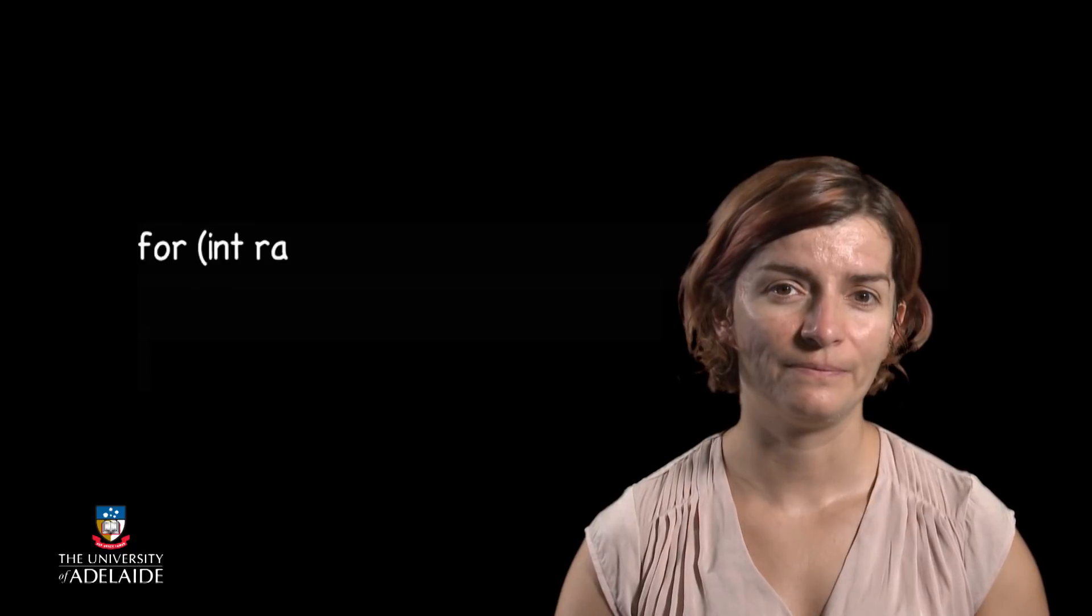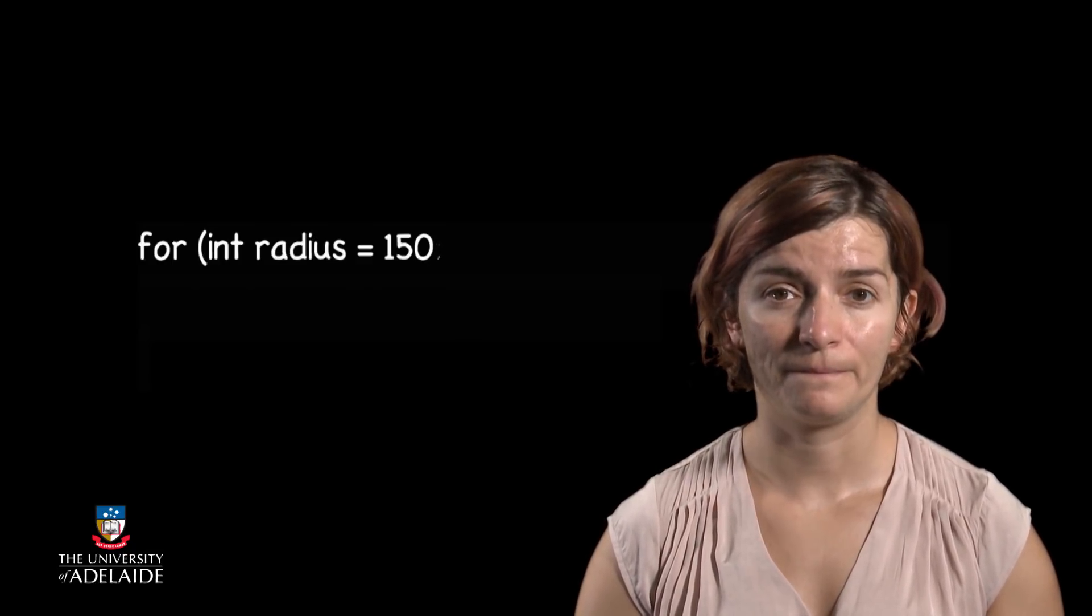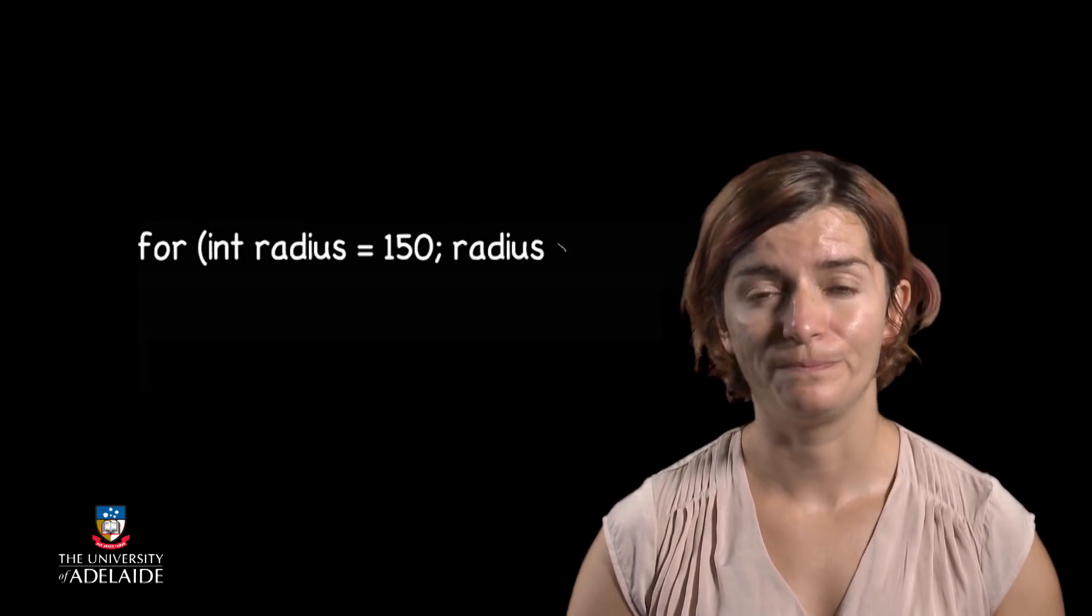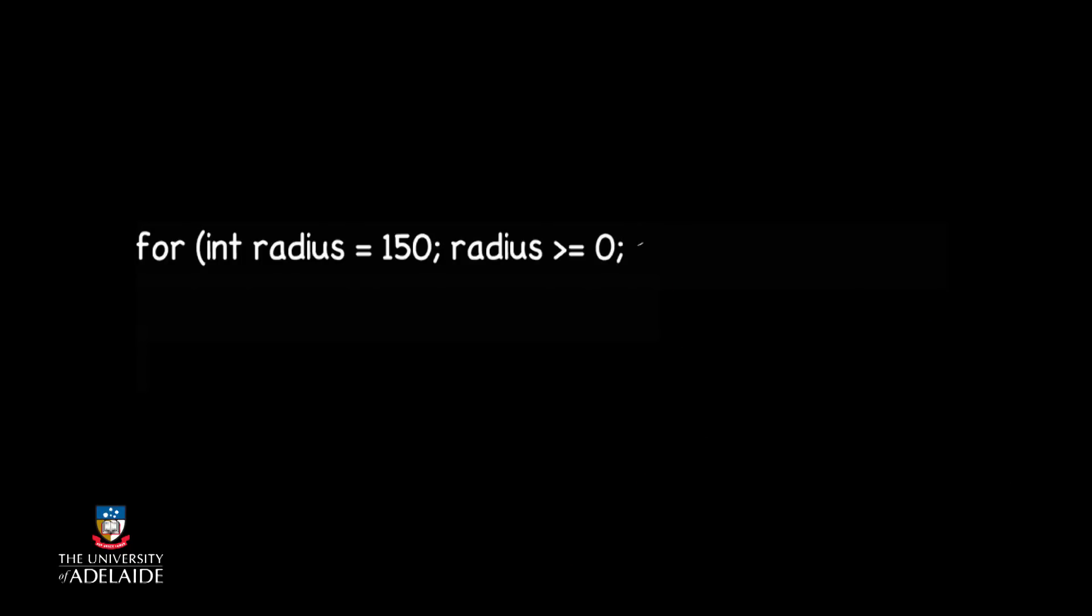Which variable should we initialize? That's right, the circle radius. For how long do we need to go? Until the radius reaches zero. How do we update the radius? That's right, we need to decrement it by 10 each time. And now we draw the circle.